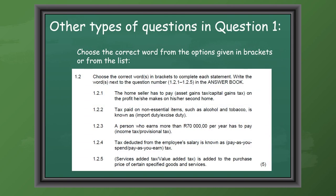Other types of questions in Section A will be to choose the correct word from the options given in brackets or from a list. It is very important that you just write your question number, for example 1.2.1, and then write the correct term next to that — in this case capital gains tax, excise duty, etc.